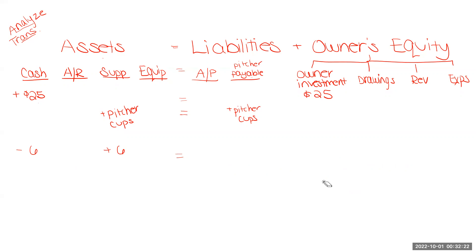Let's say we make our lemonade and make our first sale. We have a customer come and they pay us $2 for our cup of delicious lemonade. So plus $2 cash, and that is going to be revenue going up. Just so you can get some idea of the back and forth — I know it's a very simplistic example. We will look at a more realistic example in the next video.